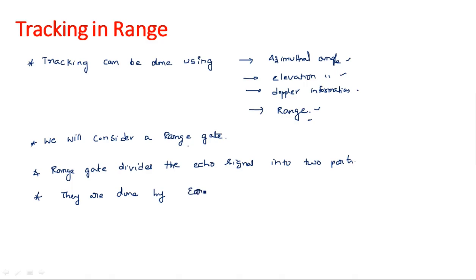The range gate divides the echo signal into two parts: the early gate and the late gate. The entire echo signal has been divided so that some part of the signal goes to the early gate and another part goes through the late gate.